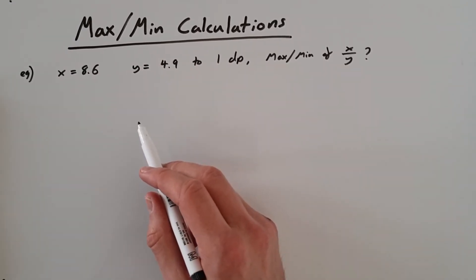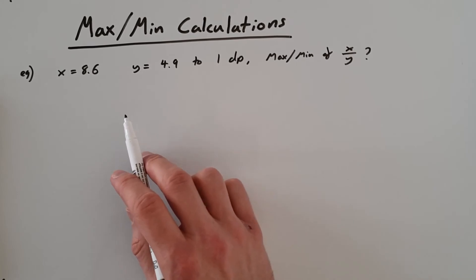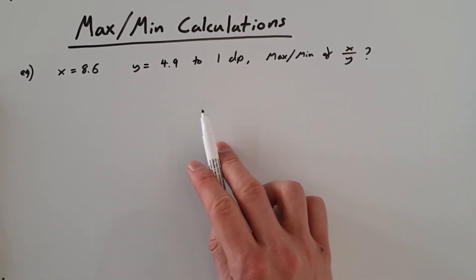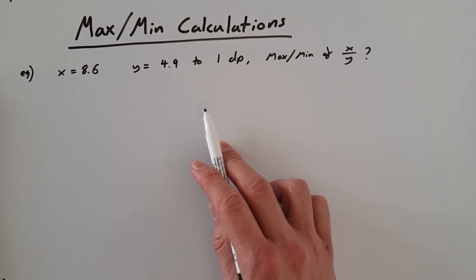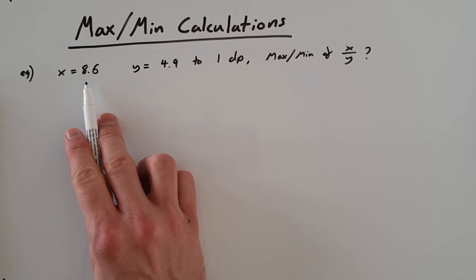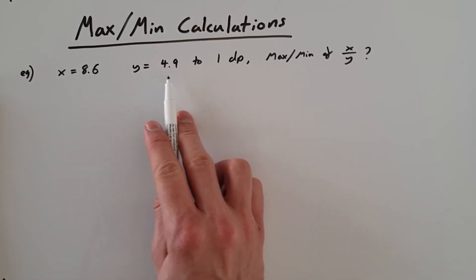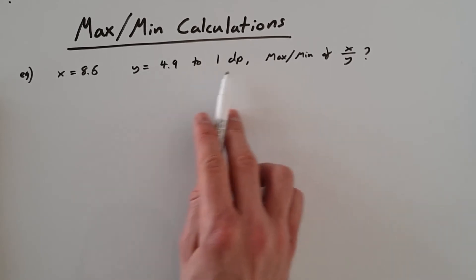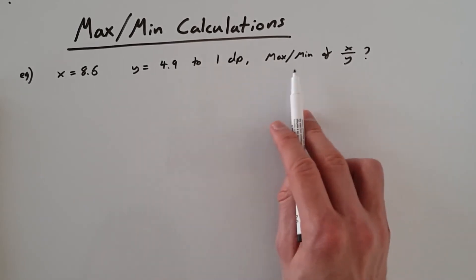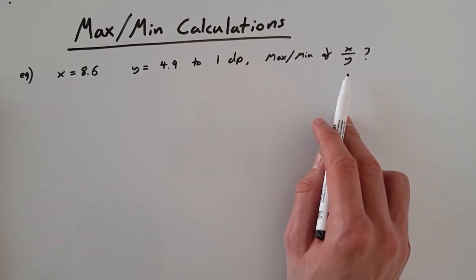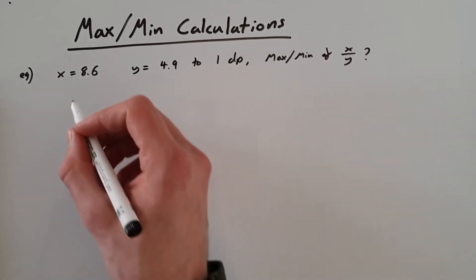I want to go over one more example that has a really tricky part which might catch out a lot of people. The example is: x is 8.6 and y is 4.9, both to the nearest one decimal place. What is the maximum and minimum value of x divided by y? Just like before, we need to work out the upper and lower bounds of these numbers.